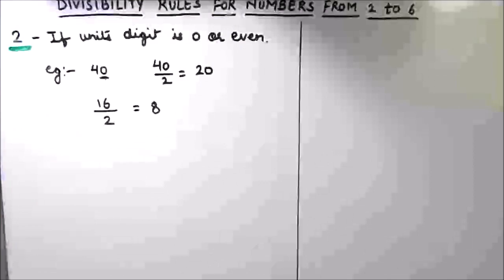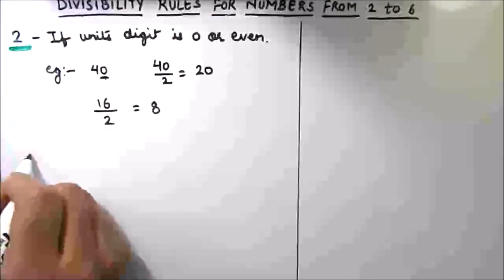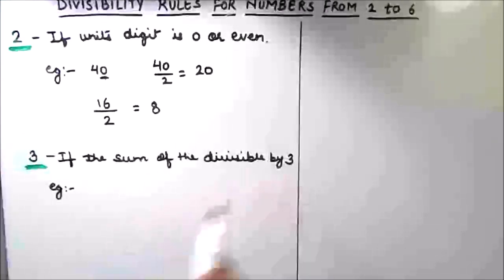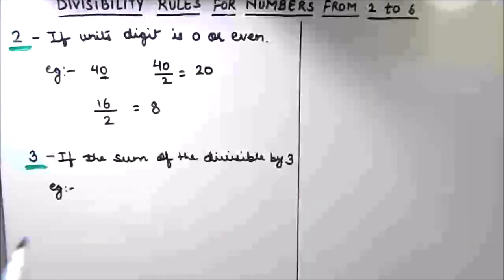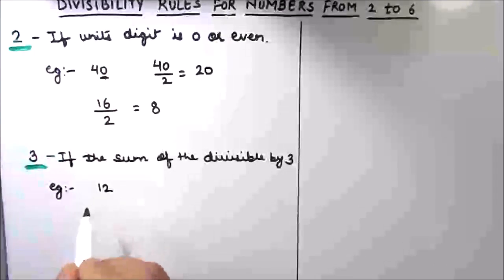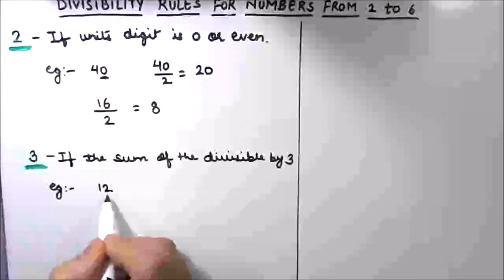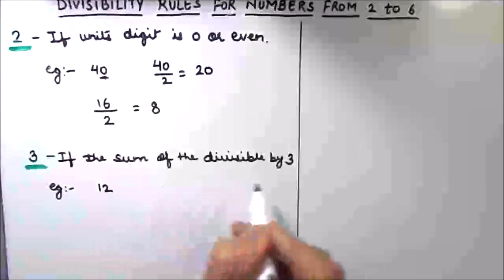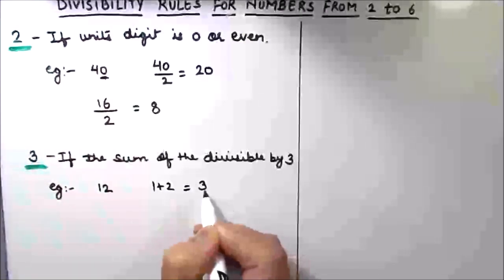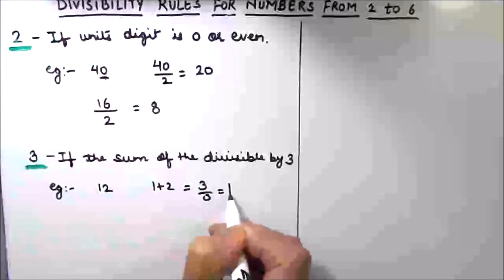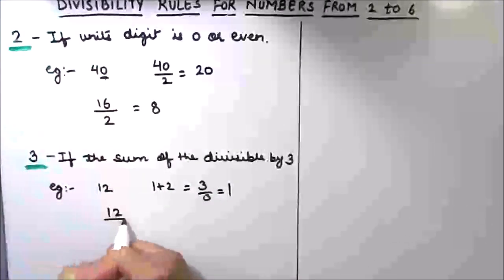Let's move on to the divisibility rule for number 3. The rule is: if the sum of the digits is divisible by 3, then the number is divisible by 3. Let's take the number 12 and check. The sum of the digits of 12 is 1 + 2 = 3, and 3 is divisible by 3, so 12 is divisible by 3.